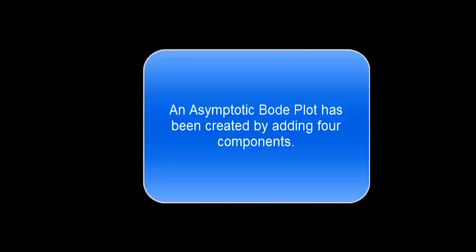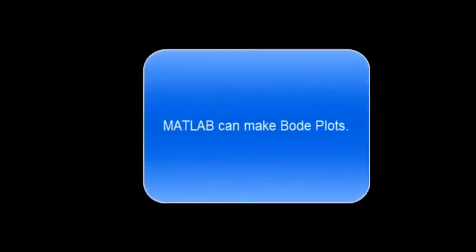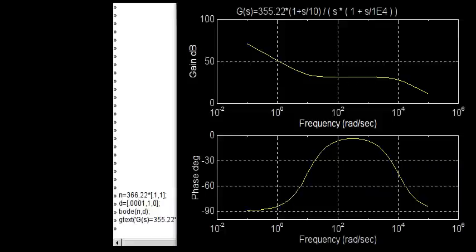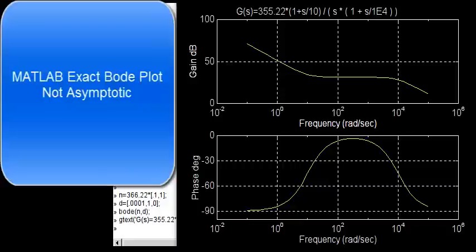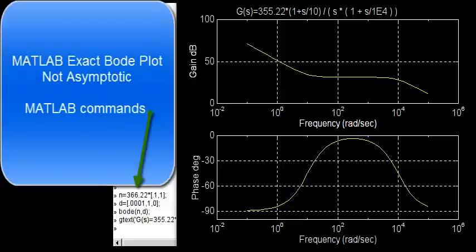An asymptotic Bode plot has been created by adding four components. MATLAB can make Bode plots. This is a MATLAB exact Bode plot — it's not asymptotic. Those are the MATLAB commands that created the exact Bode plot.